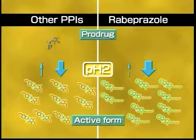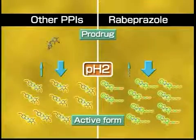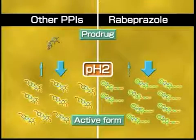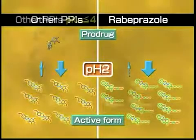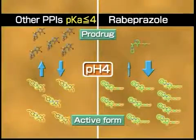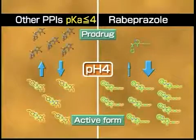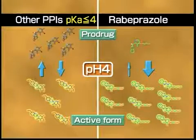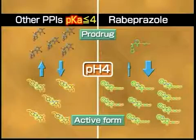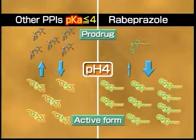In strong acid, any species of proton pump inhibitors can transform into their active forms. However, as the acidity lowers — that is, as the pH value increases — the number of active forms decreases. The pH at which the number of prodrug forms and the number of active protonated forms are equal is called the pKa for each inhibitor.